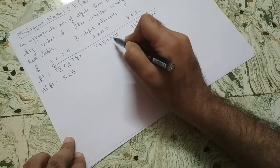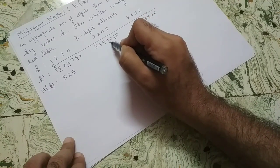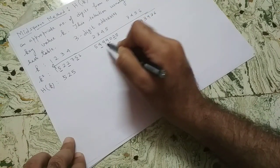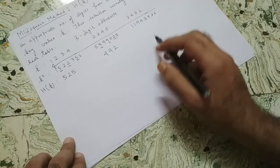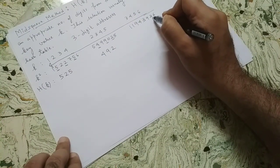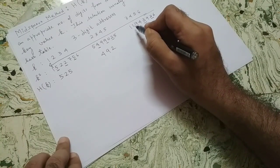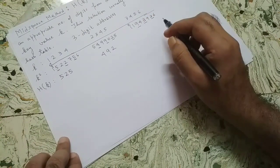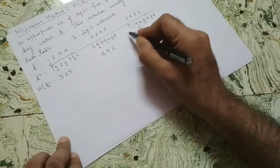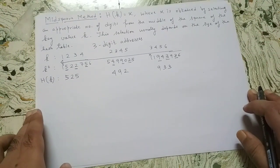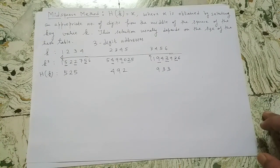Applying mid-square to the second key: select digits at even positions from right to left from the squared value — positions 2, 4, 6 — giving index 492. For the third key, the same process gives index 933. Once we have selected the required three digits, anything beyond is ignored. This is how mid-square method works.